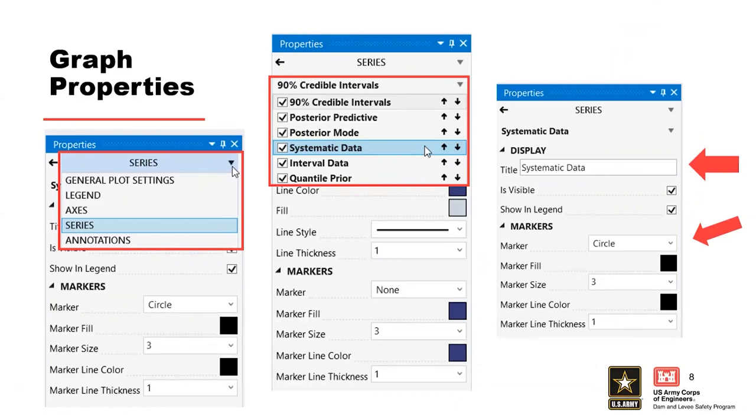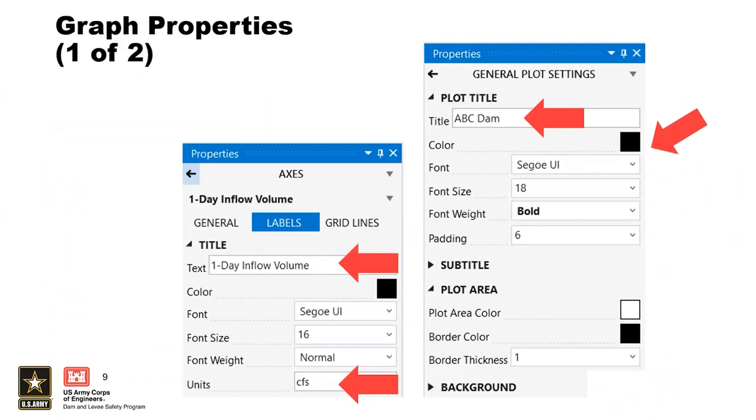To make changes to the y-axis, select the axis and enter a new name and units in the appropriate text boxes. Similarly, to add a title to the plot, select the general plot settings and enter the title in the text box. You can also change the color, font, and size of the text.